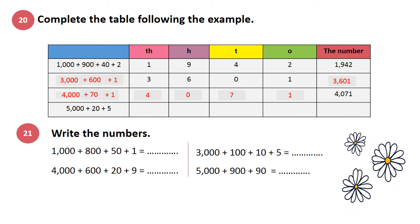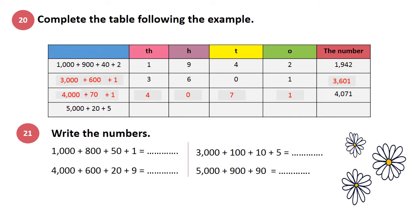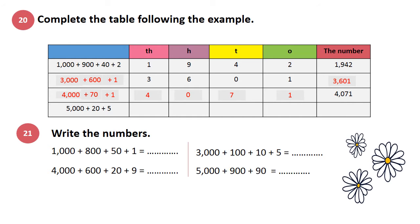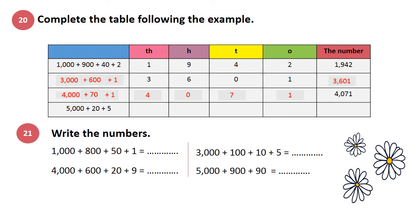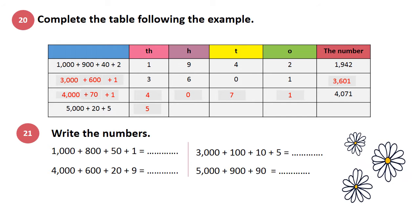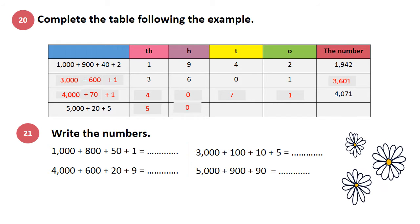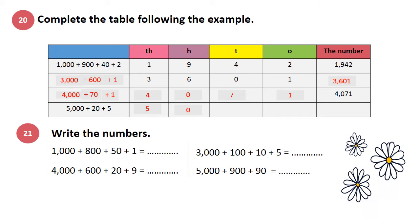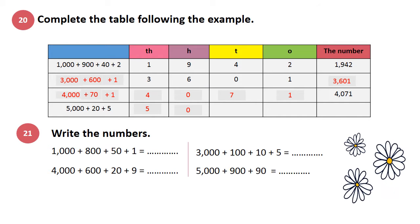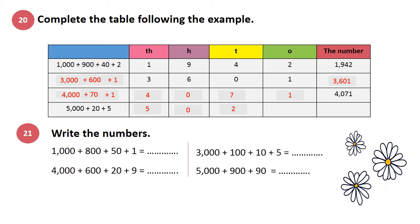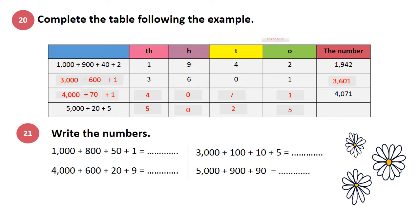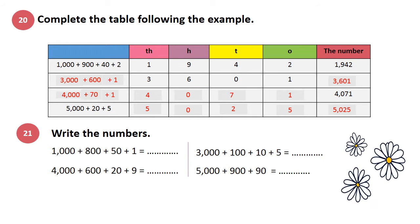Let's see the last example. 5000 plus 20 plus 5. 5 — how many zeros? 3. So I write 5 in column TH which means 1000. Do I have 2 zeros here? No. So I write 0 in column H which means 100 — there is no 100 digit. Plus 20 — I have 1 zero, so I write 2 in column T meaning 10s. And 5 in column 1s. Let's compose the number: 5,025.